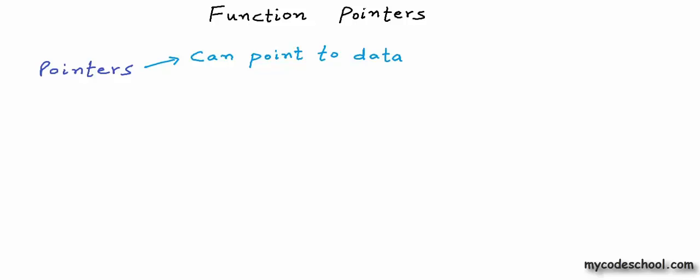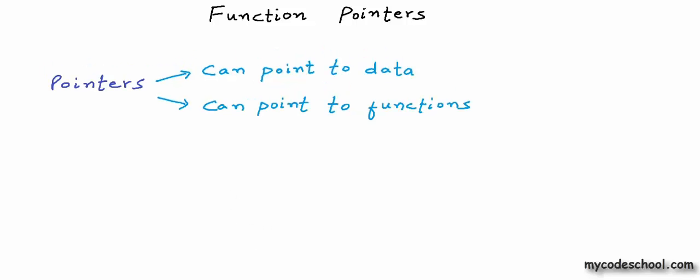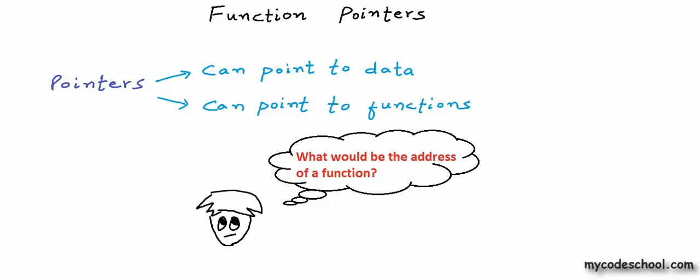Now we are saying that we can have pointers that can store address of functions, or in other words can point to functions, and we can use a pointer to a function to dereference and execute the function — and this is really interesting. Some basic questions would pop up: what really would be the address of a function, and even if we can have pointers to functions, what are the use cases? There are really interesting use cases of function pointers but we will talk about them later. Let's first try to understand the core logic here.